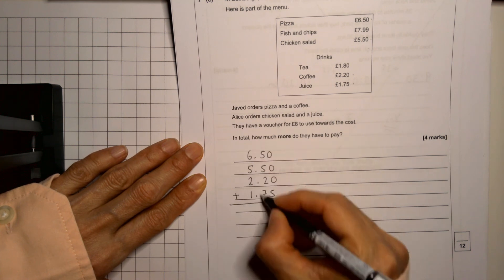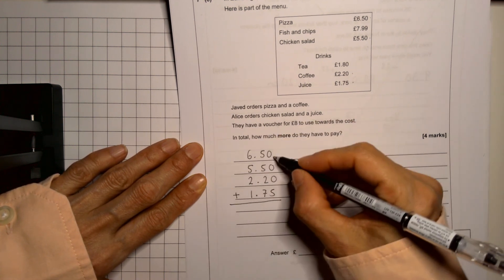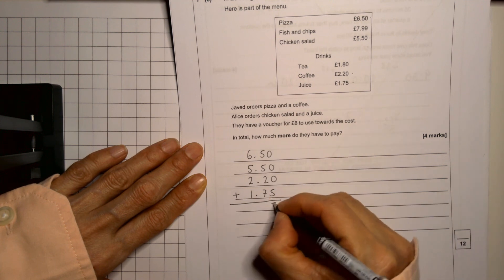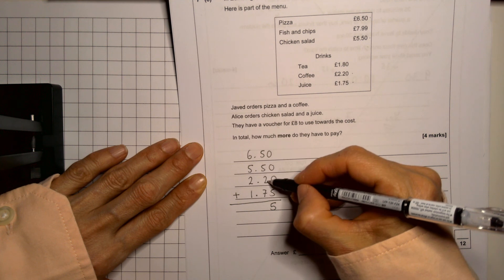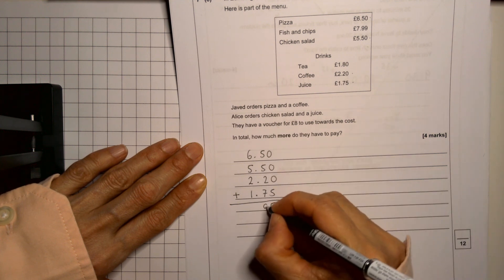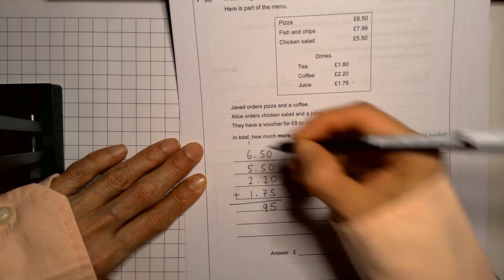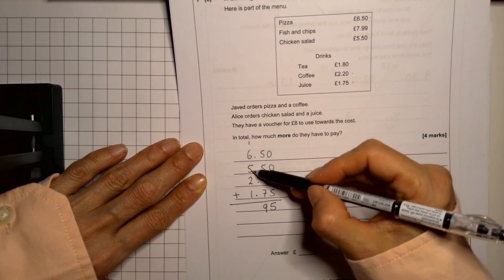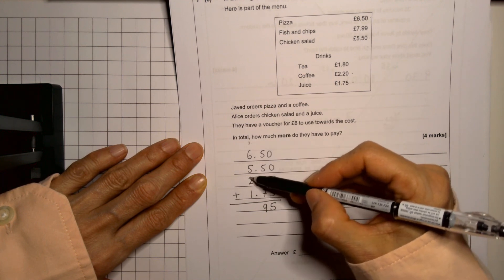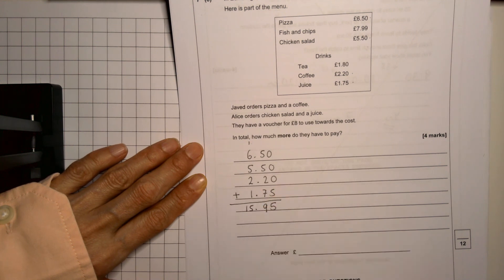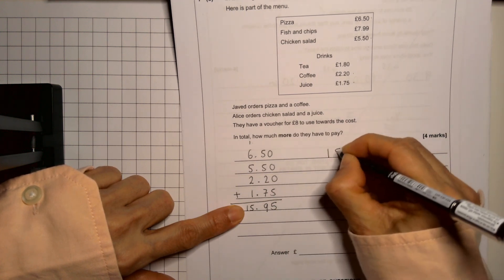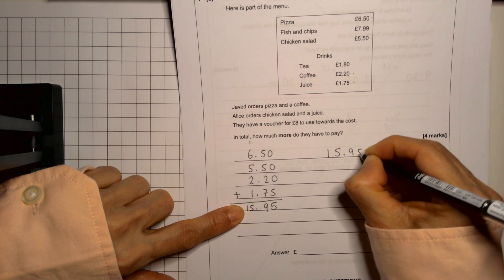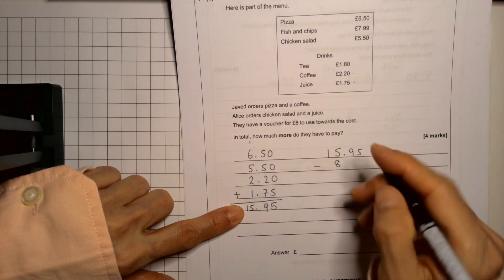Zero plus zero plus zero plus 5. 5, 10, 12, and 7, 19, carry one. So I have 6, 7, 7 plus 5 is 12, 13, 14, 15. So the total cost of their meal is 15 pounds and 95 pence. They have an eight pound voucher. So we're going to take that away. So 15.95 take away the eight pound voucher to find out how much more they need to pay. Now remember eight pounds is over here because really eight pounds has no pence.